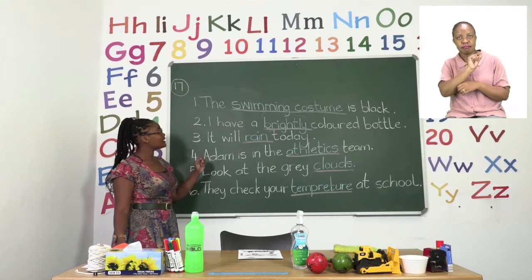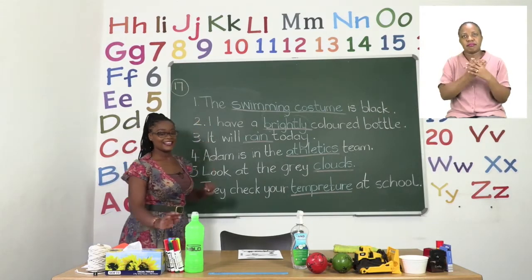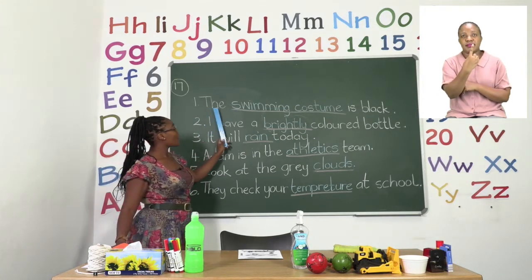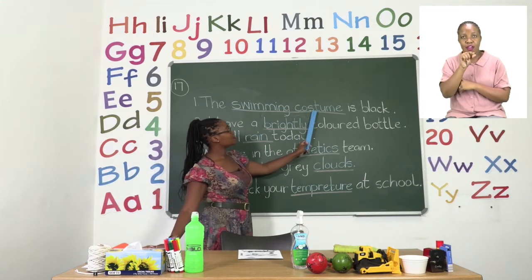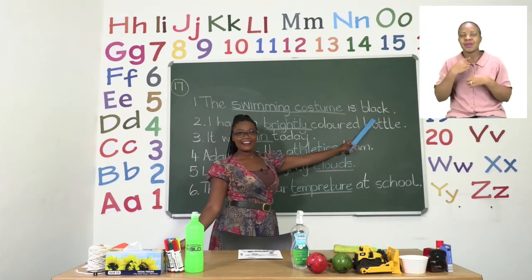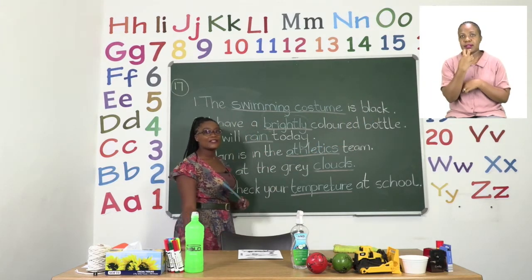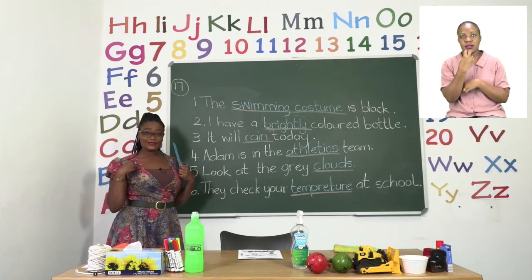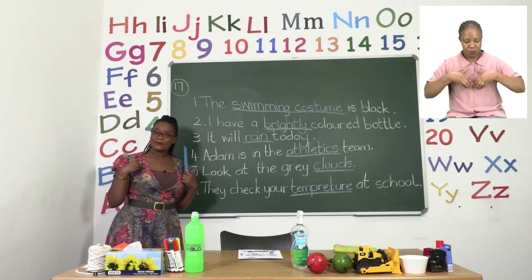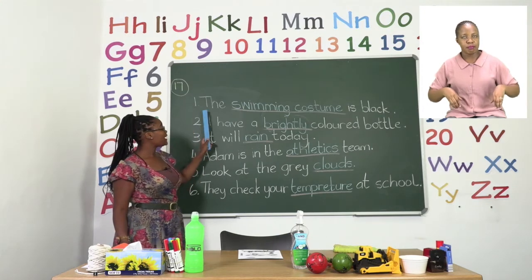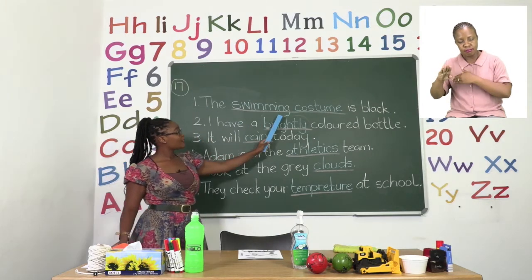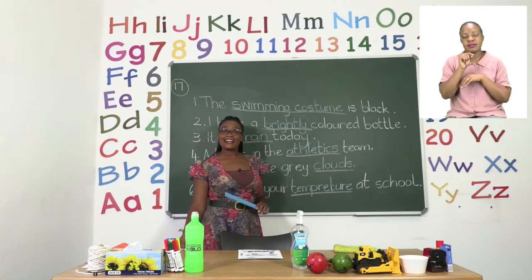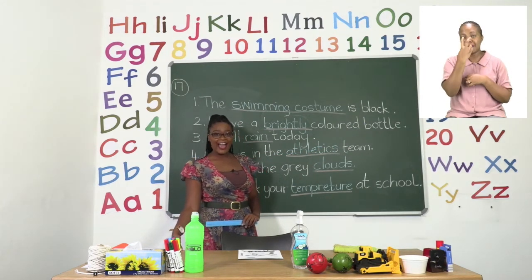The first sentence on the board says: the swimming costume is black. Remember we wear swimming costumes when we are going swimming. So we say the swimming costume is black, which means the colour of the swimming costume is black.